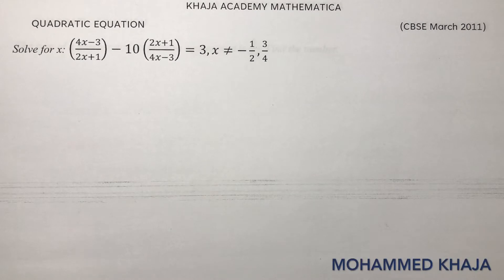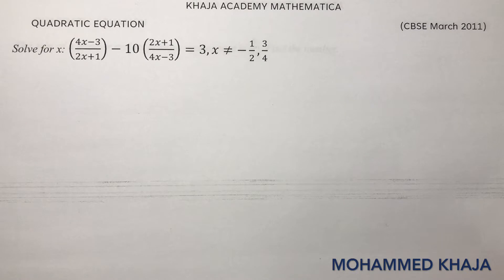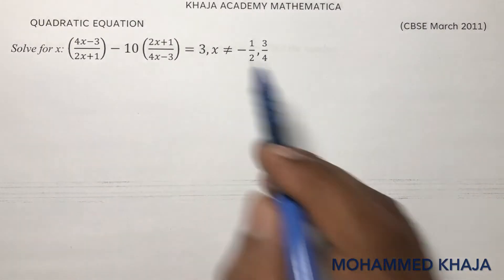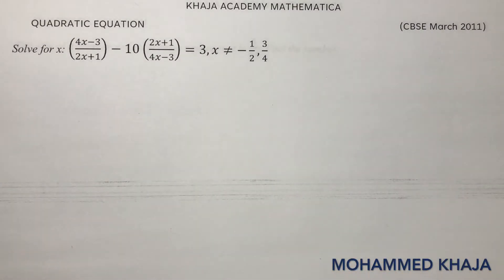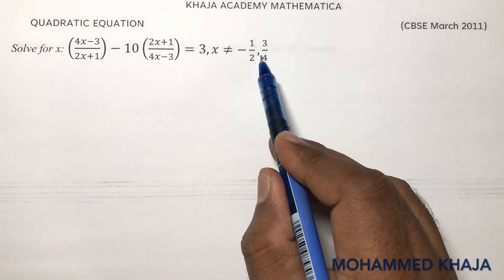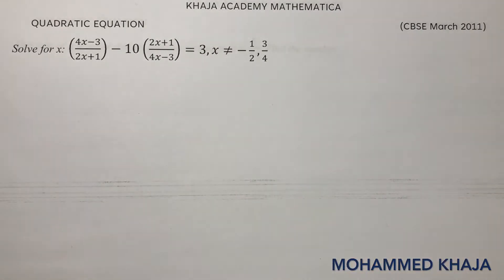Solve for x: (4x minus 3) by (2x plus 1) minus 10 times (2x plus 1) by (4x minus 3) equals 3, where x is not equal to minus 1 by 2 or 3 by 4.